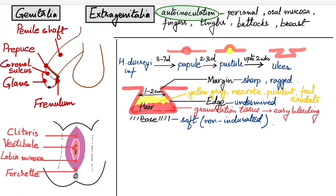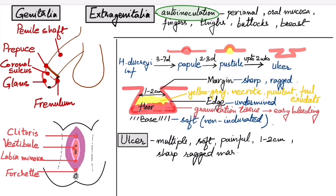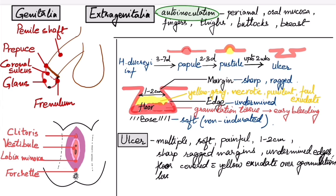The size of the ulcer is around one to two centimeters. So how we will write the description: there are multiple ulcers due to auto-inoculation, multiple soft, very painful, one to two centimeters in size, sharp ragged margins with undermined edges, and the floor covered with yellow exudate over granulation tissue that bleeds easily.